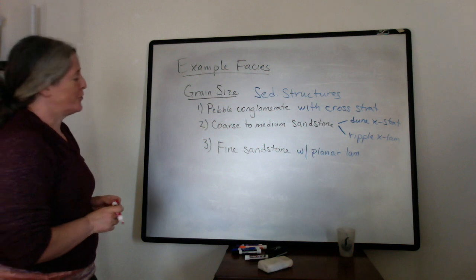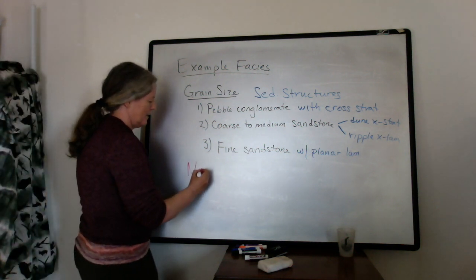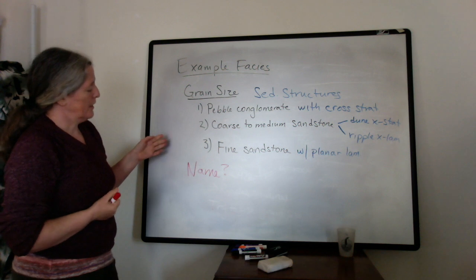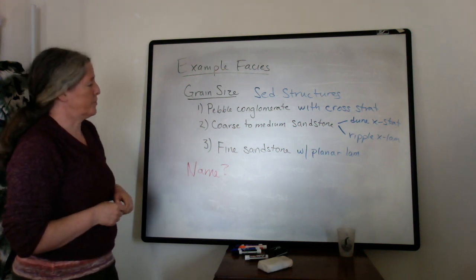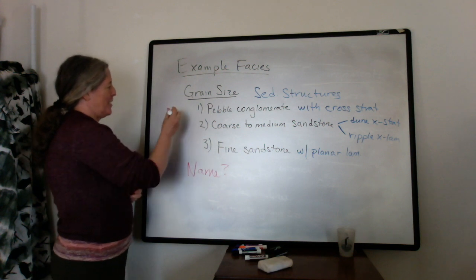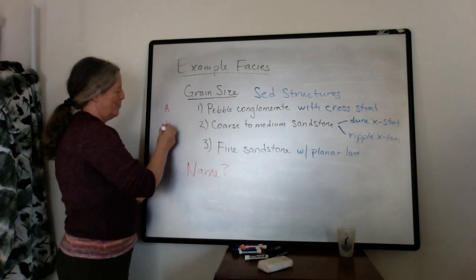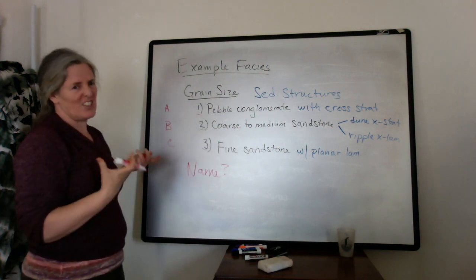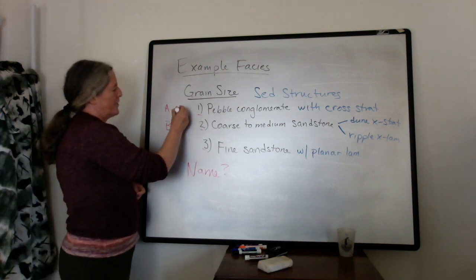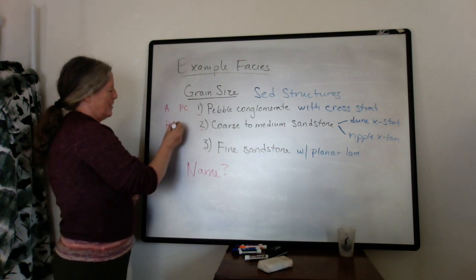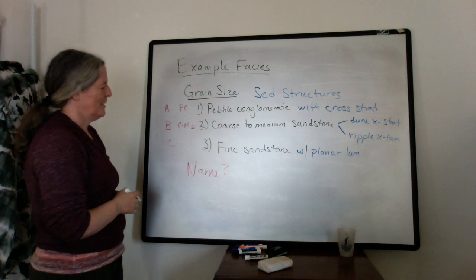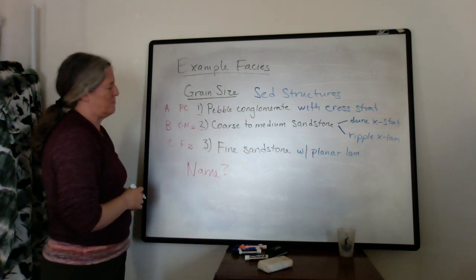Then we have the issue of what to call them. How do you name your facies? Often what happens is when a scientist first starts in a field, they use a name for them that's very descriptive or is some sort of code. I might name this one, I could name it A, B, C, or 1, 2, 3. That's a little hard for me to remember, especially if I have six or seven different types. So I could maybe call this one PC for pebble conglomerate, maybe CMSS for coarse to medium sandstone, FS for fine sandstone. That would work.